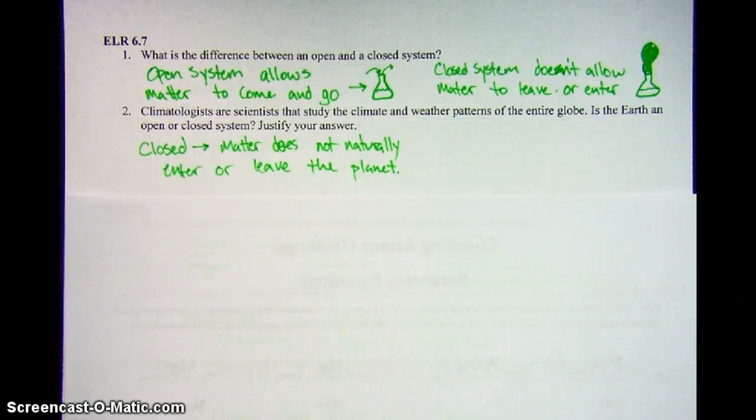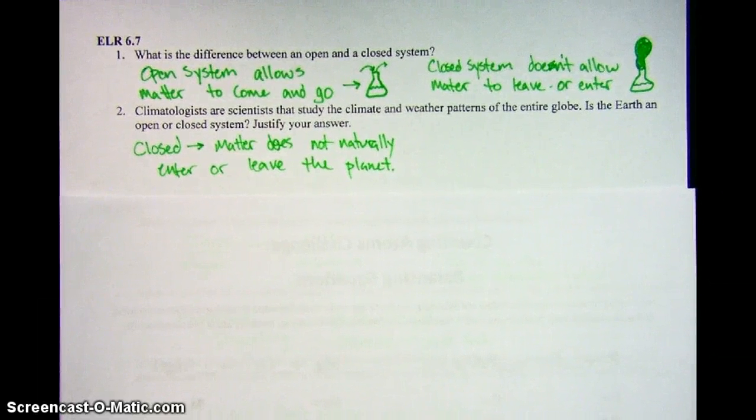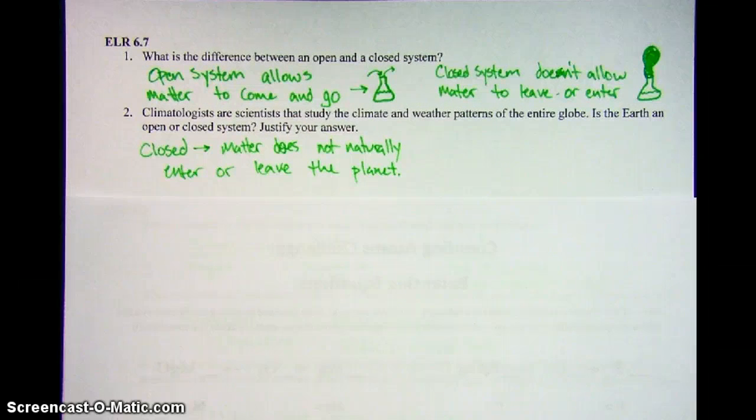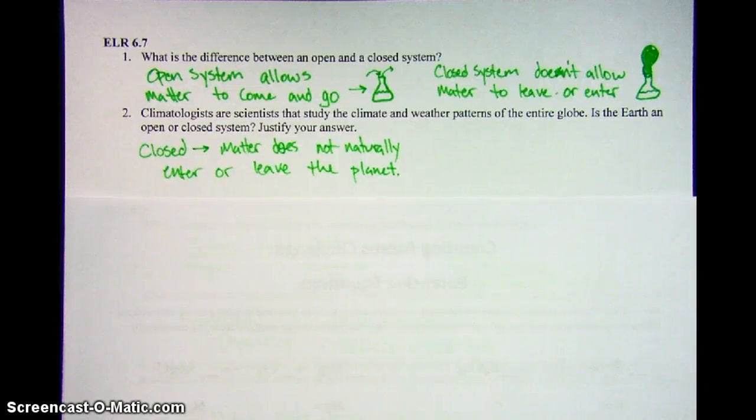You could also argue that it's an open system to the rest of the universe because especially with humans now experimenting with spaceflight, we have taken some of the materials on our planet and we've gone to the moon and other places in the solar system. And you could argue that asteroids entering our atmosphere and entering our planet is also a reason why we have an open system. But it all comes down to how you have justified it.